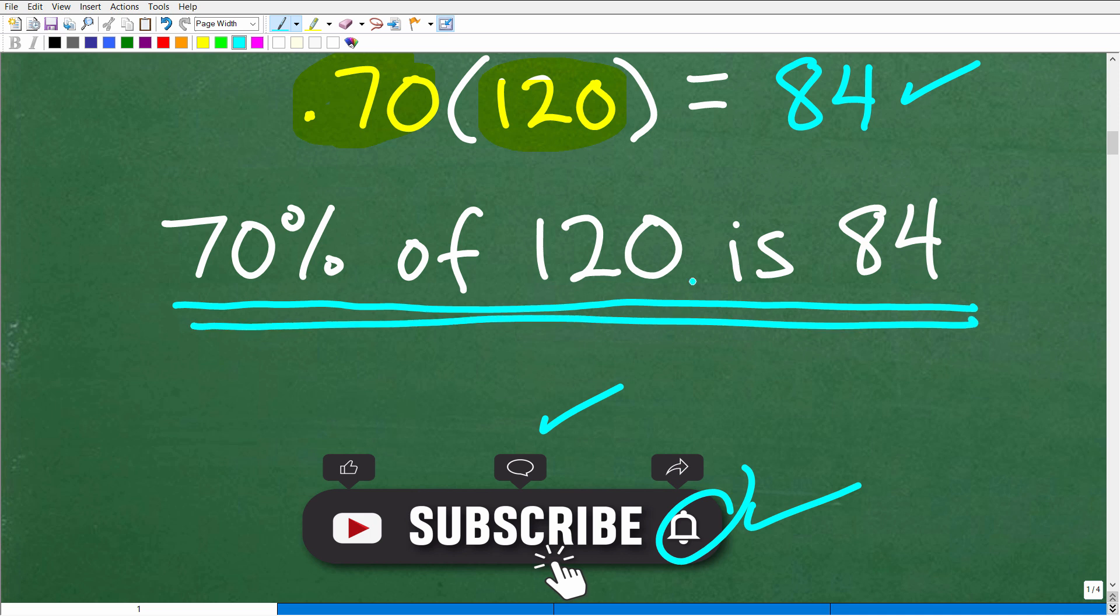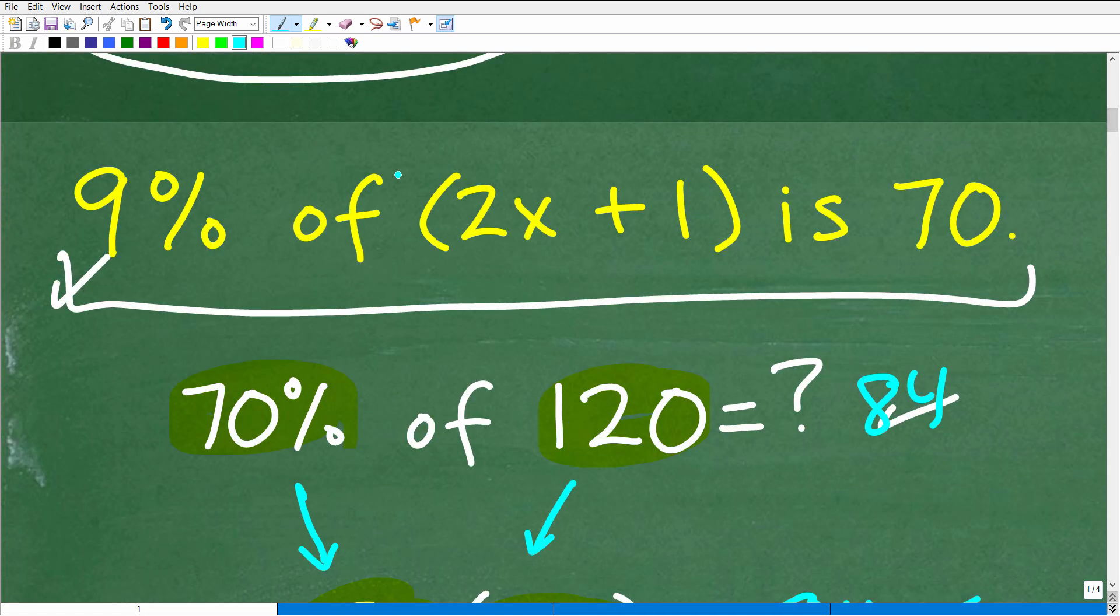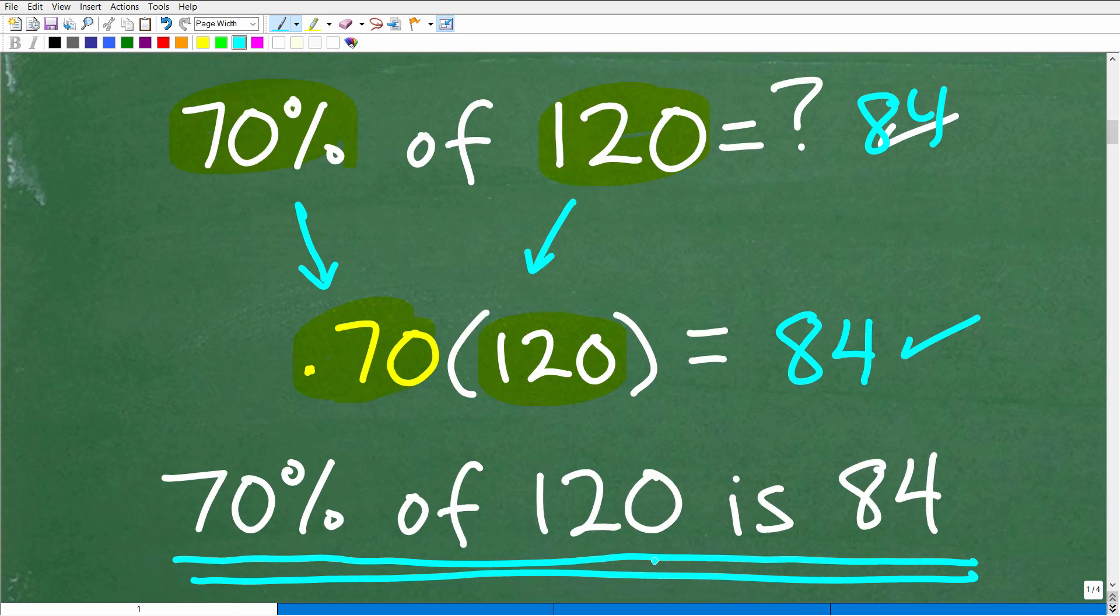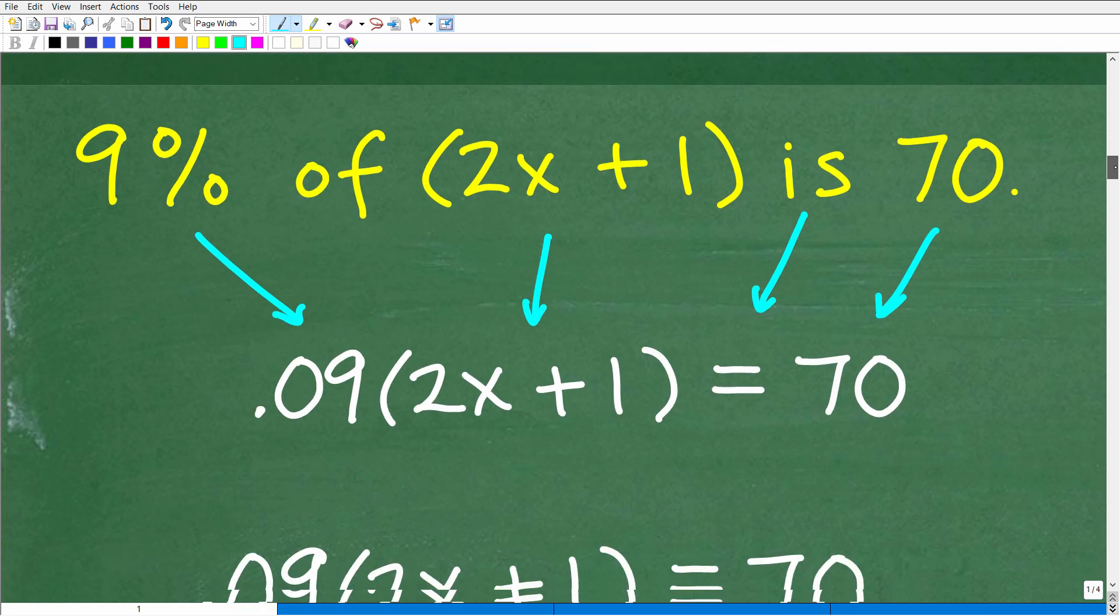So 70% of 120 is 84. Now, let's look at the actual problem here. 9% of this thing is 70, okay? 9% of this thing, this is an expression, 2x plus 1 is 70. And if you kind of go back here, 70% of 120 is 84. So you see how there's a comparison here, right? In other words, the problem that we're dealing with that involves algebra is in the same format as this particular problem. So if we know how to find the percent of a number, that's exactly what we're going to be doing to solve this particular percent problem.